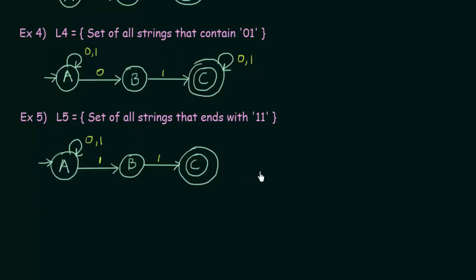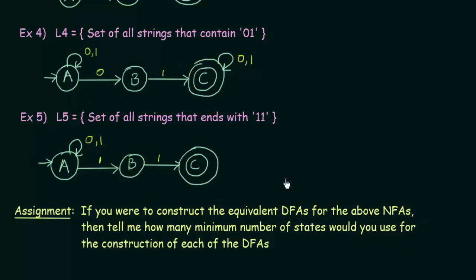This is the way we designed the NFAs for these examples. I hope it was clear to you. Since we have discussed these NFAs, I would give you one assignment problem: if you were to construct the equivalent DFAs for the above NFAs, tell me how many minimum number of states would you use for the construction of each of the DFAs. We have constructed the NFAs for languages L1 to L5 — now try to construct the equivalent DFAs and leave your answer in the comment section below. Thank you for watching this lecture and see you in the next one.